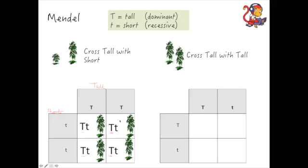He then took two of these tall plants in the second experiment and crossed them together. So this time he's taken the heterozygous with one dominant and one recessive allele, and he's crossed those together.